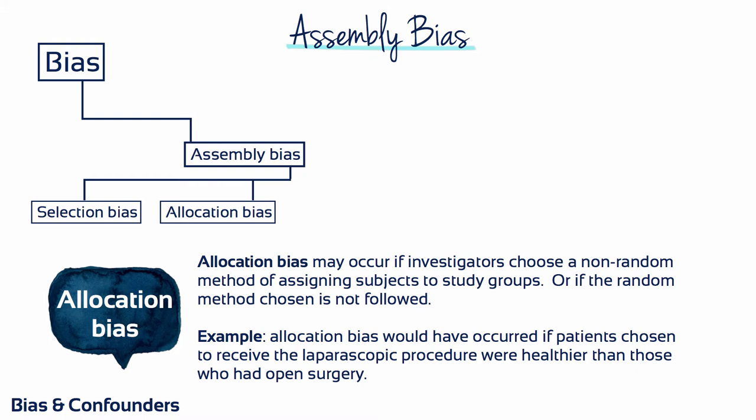Allocation bias occurs if investigators choose a non-random method of assigning subjects to study groups, or if the random method that has been chosen isn't followed. For example, allocation bias would have occurred if patients chosen to receive the laparoscopic procedure were healthier than those who were chosen to have open surgery. The researchers might have done this because they favoured the intervention and wished to show that it was more effective than the control treatment.